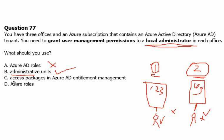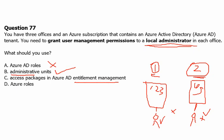Option C is access packages in Azure Active Directory entitlement management. Entitlement management is an identity governance feature that enables organizations to manage identity and access lifecycle — we are not looking for access lifecycle management here. Option D is Azure roles, which is an authorization system built into Azure Resource Manager providing fine-grained access management to Azure resources — this is also not applicable here.